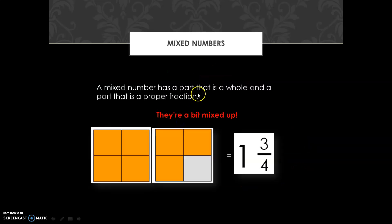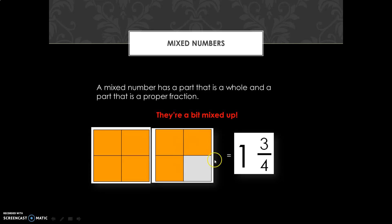Mixed numbers: a mixed number has a part that is a whole and a part that is a proper fraction — they are a bit mixed up. In this example, the first whole is fully shaded, and in the second shape three parts are shaded, so we write it as one and three upon four.